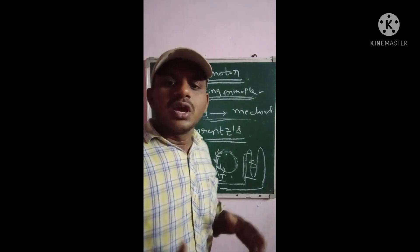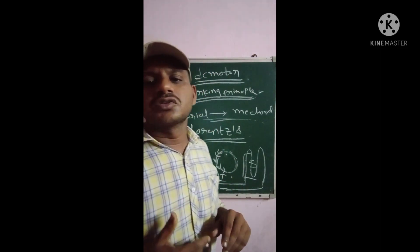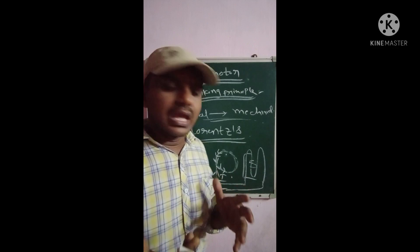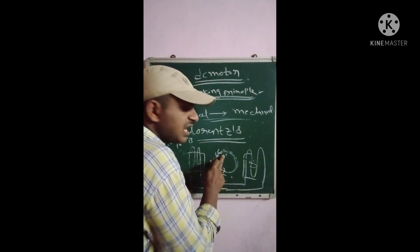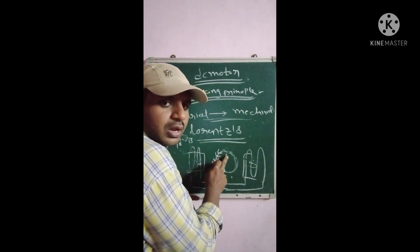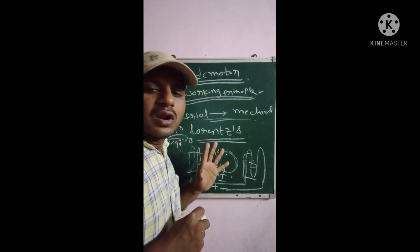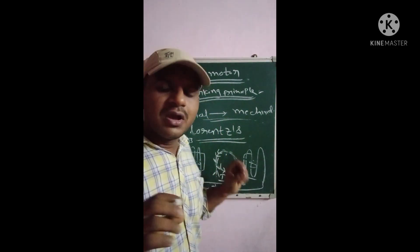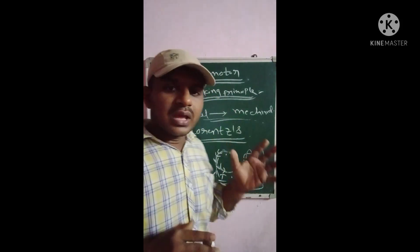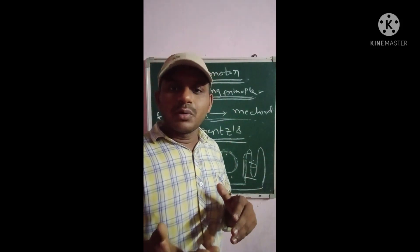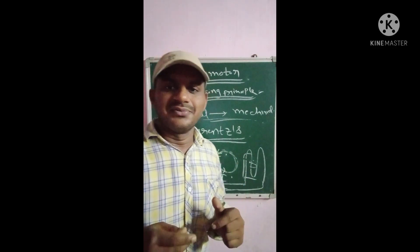This is called Lorentz's law — the principle of Lorentz's law: when a current-carrying conductor is placed in a magnetic field, then a force exists and is experienced in that conductor. That is Lorentz's law. Further, we are going to discuss the construction of the DC motor. Thank you.